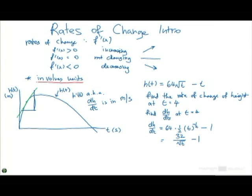That's dh/dt, right? So okay. Now dh/dt, and so at x equals 4, sorry, t equals 4. dh/dt equals, well, I'm just stuck in 4, 32 on √4 minus 1. 32 on √4 is 32 on 2 minus 1 gives you 15. 15 what? 15 meters per second.